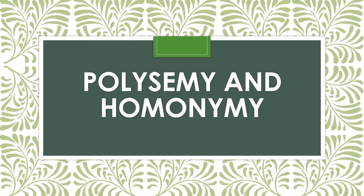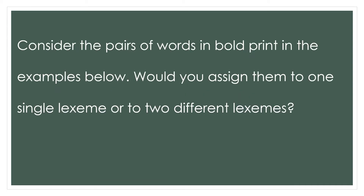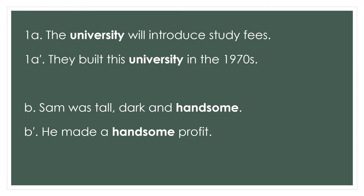Hello and welcome back to semantics. In this lesson we will deal with polysemy and homonymy. Let's look at some examples — would you assign them to one single lesson or to two different lessons? Number one A: the word 'university', and number one B: the word 'handsome'.